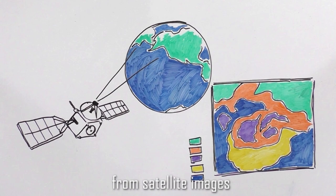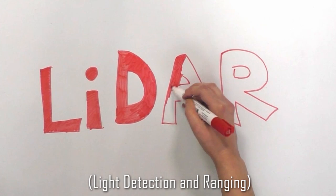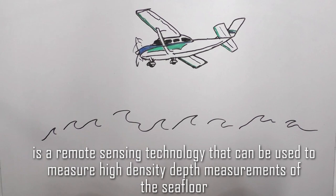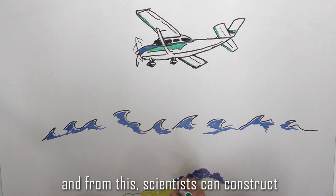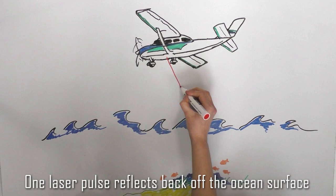Two-dimensional habitat maps were created for each site from satellite images, and three-dimensional maps were created using LiDAR. LiDAR, Light Detection and Ranging, is a remote sensing technology that can be used to measure high-density depth measurements of the seafloor, and from this scientists can construct a 3D model of the seafloor habitat.